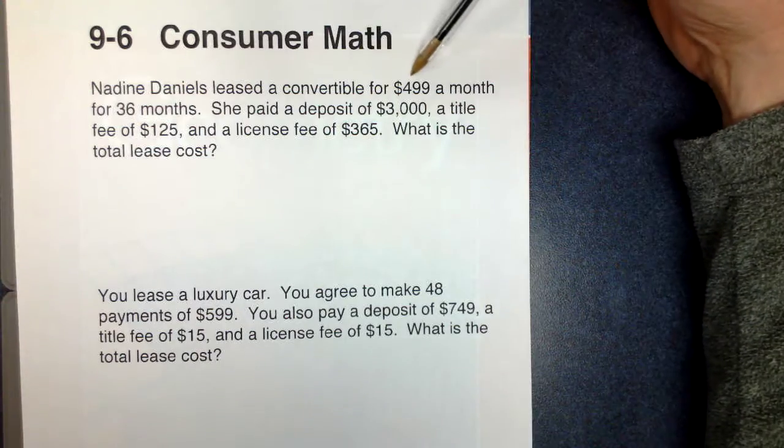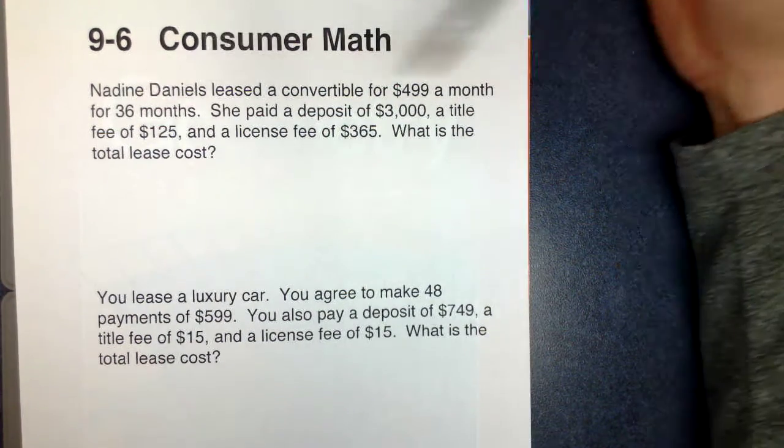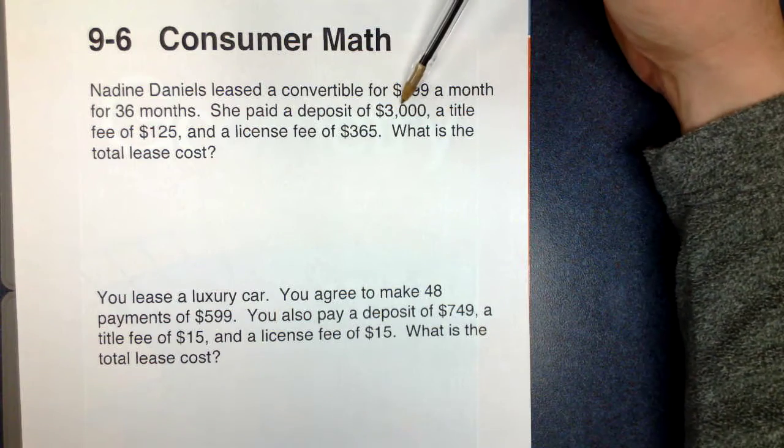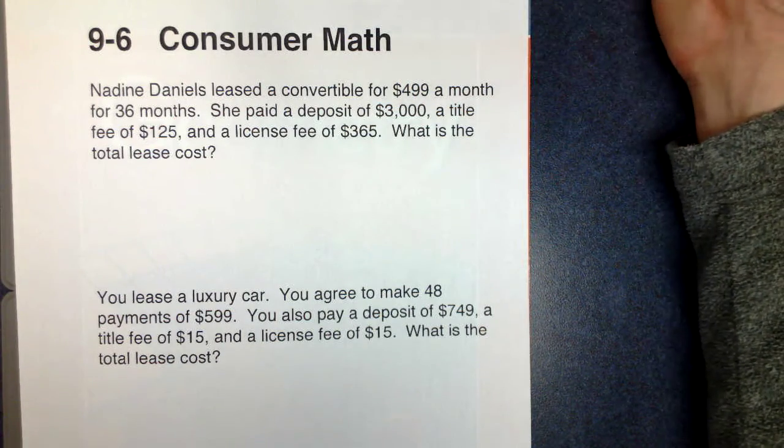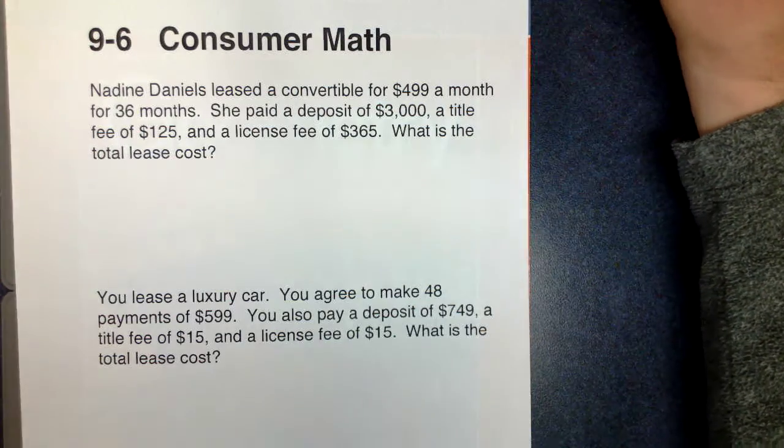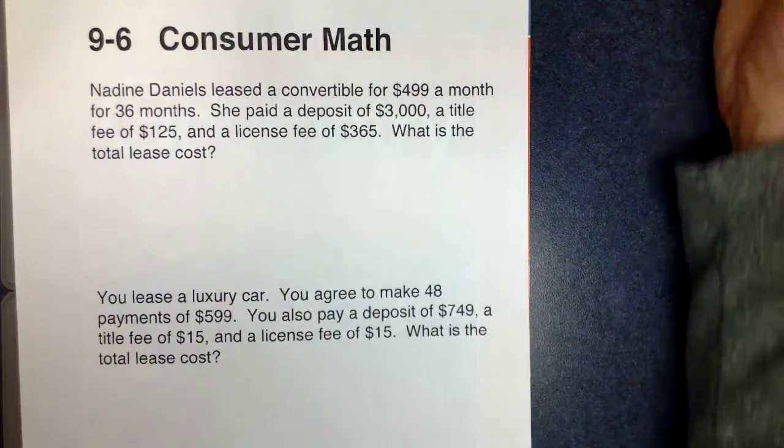We've got Nadine. She's going to lease a convertible for $499 a month. She's going to do it for 36 months. She's going to pay a deposit of $3,000, a title fee of $125, and a license fee of $365. To get the total cost, we're just going to put all of that together.